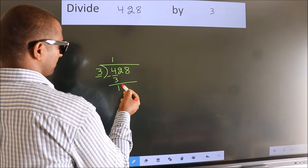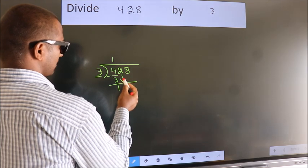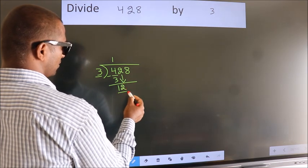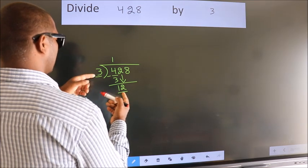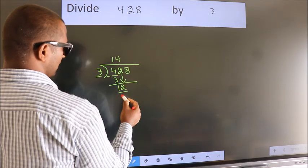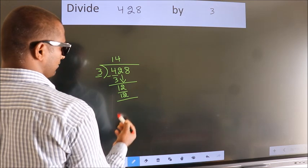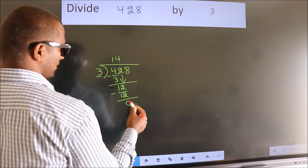After this, bring down the beside number. So, 2 down. So, 12. When do we get 12? In 3 table, 3 times 4 is 12. Now, we subtract. We get 0.